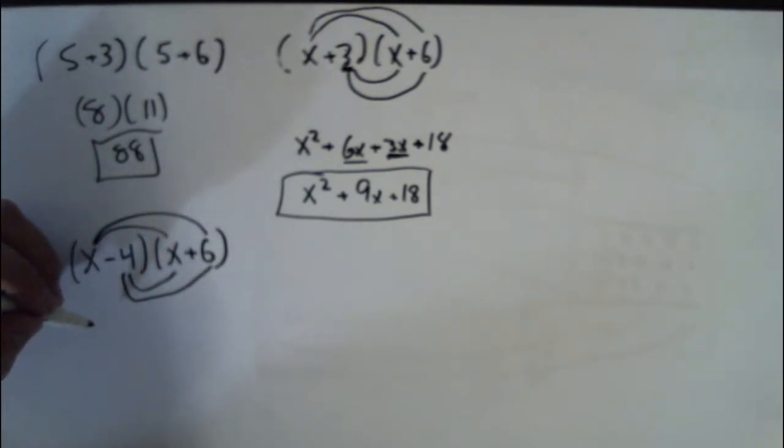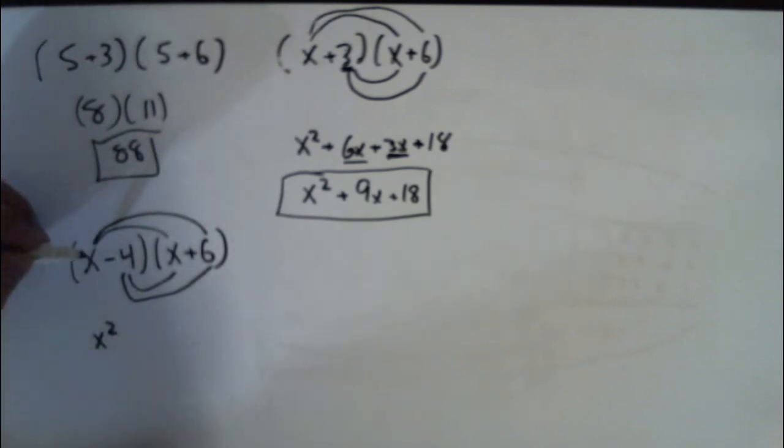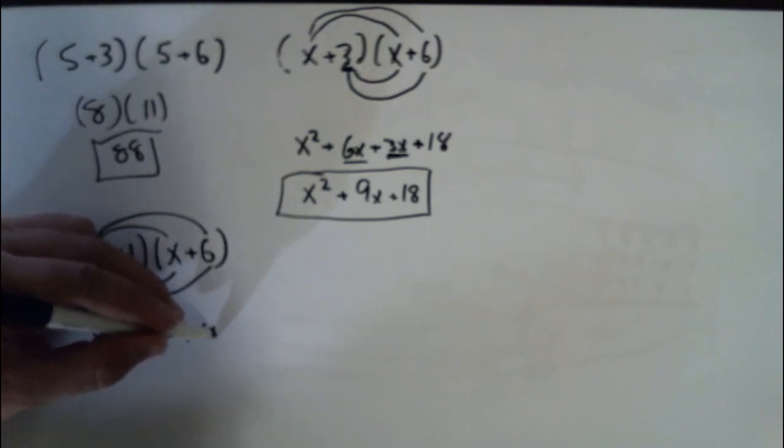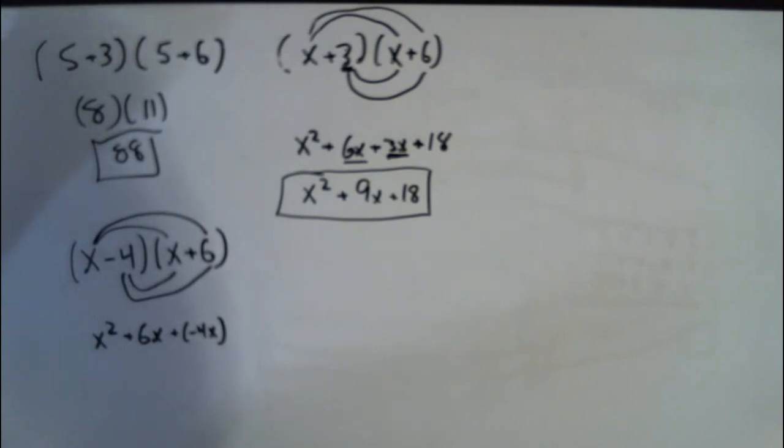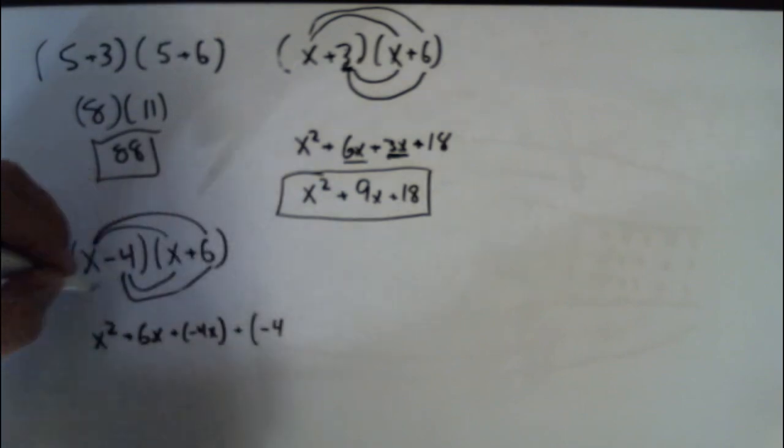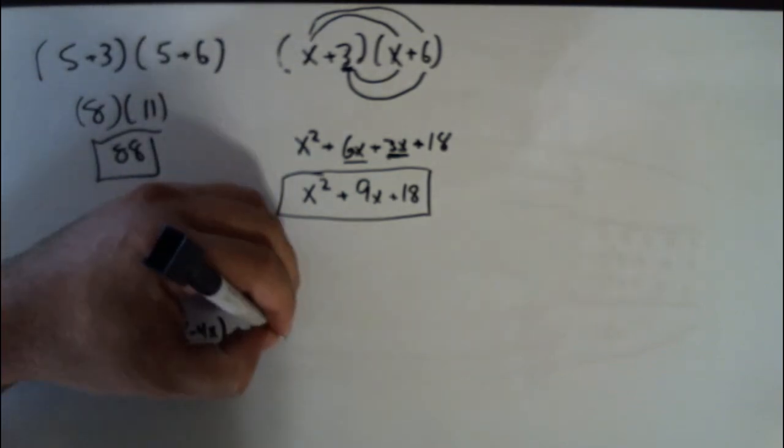So I will say x squared x times x plus 6x plus negative 4x. I don't know what the best sign convention is when you're first learning. And plus negative 4 times 6, which is going to be negative 24.